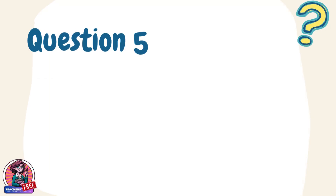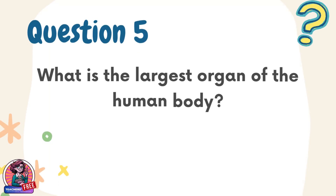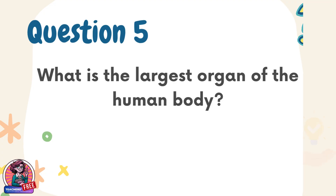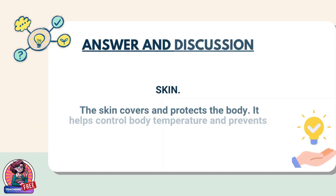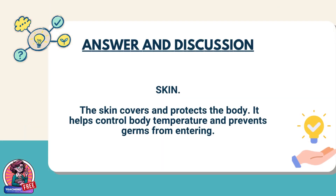Question 5. What is the largest organ of the human body? Answer: Skin. The skin covers and protects the body. It helps control body temperature and prevents germs from entering.